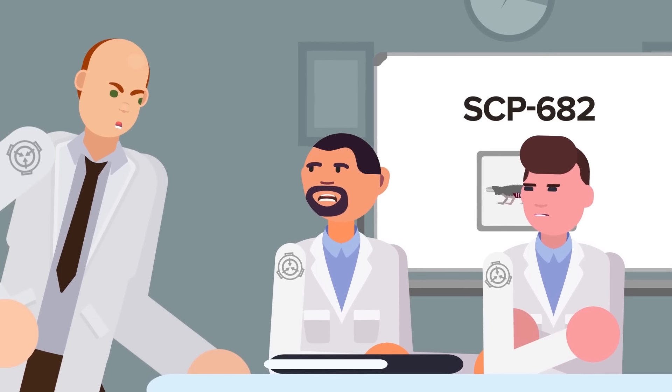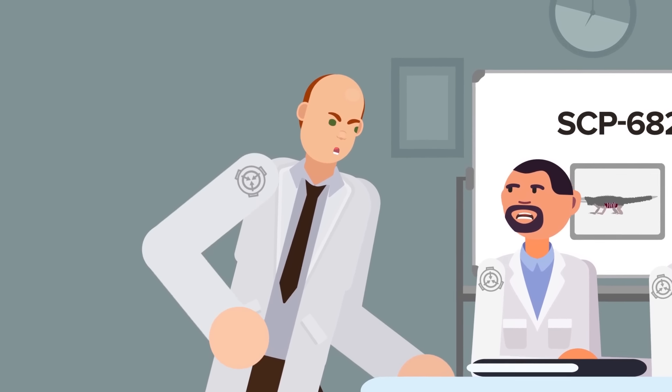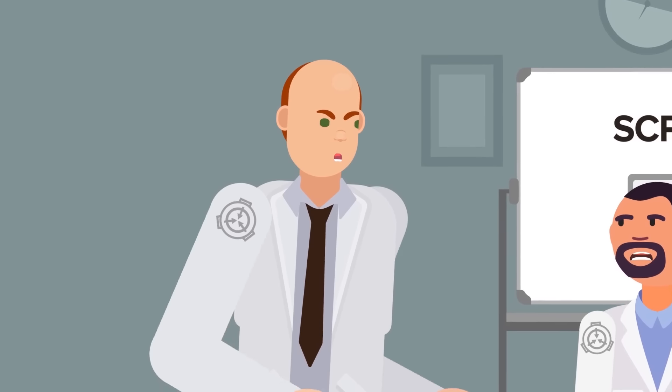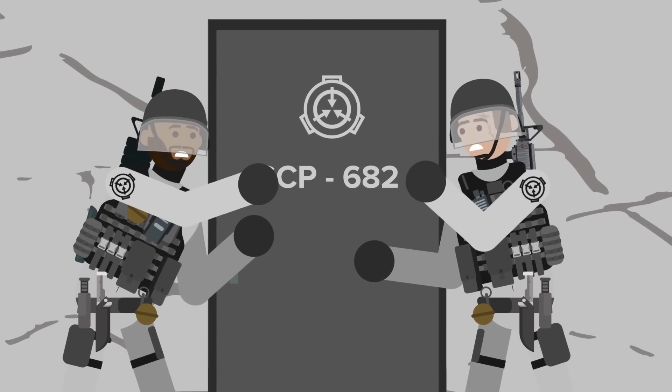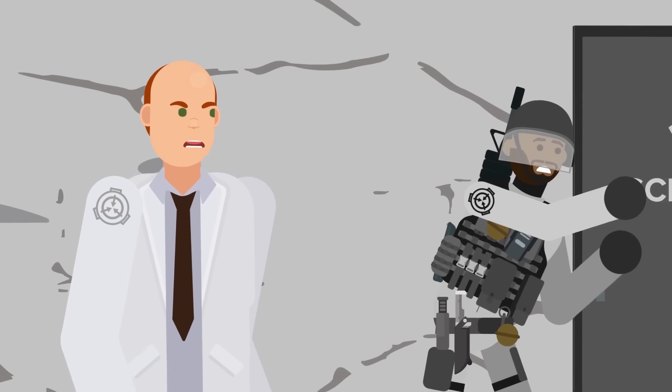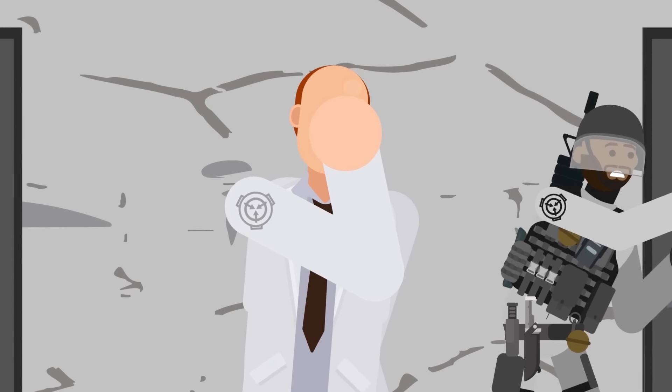Horton went on to convince the other personnel that were present that throwing SCP-682 into the black hole was of moral significance. Because any day that they did not do so was making the dark future where normalcy had collapsed, and SCP-682 was free among the chaos more of a possibility.